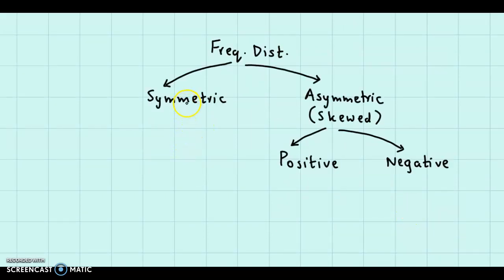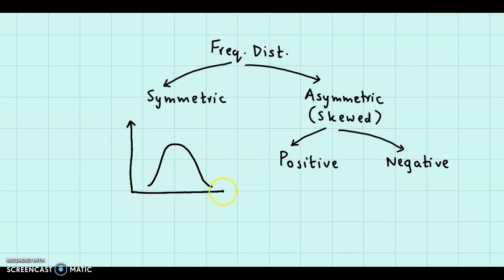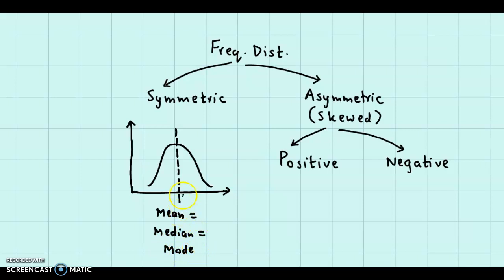Let us understand with diagrams. For symmetric distributions, suppose this is the frequency distribution. We have the x-axis and the y-axis. If we draw the axis of symmetry at the center, we would see that 50% of the observations lie below the axis and 50% above the axis. Also, in this case, the mean coincides with the median and the median coincides with the mode. So, in case of a symmetric distribution, mean is equal to median is equal to mode.